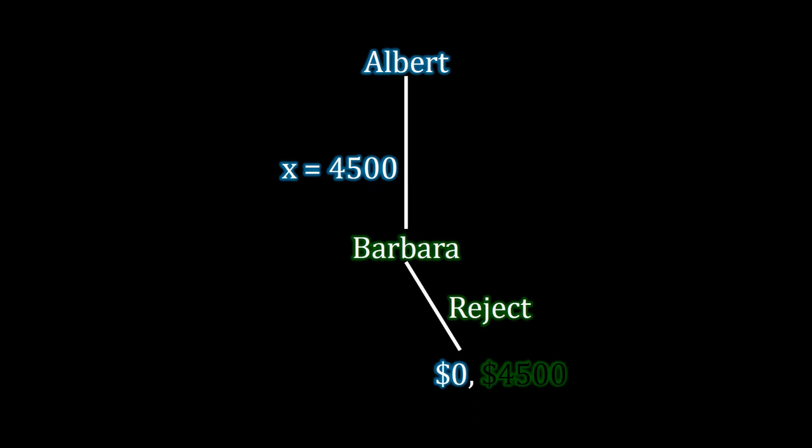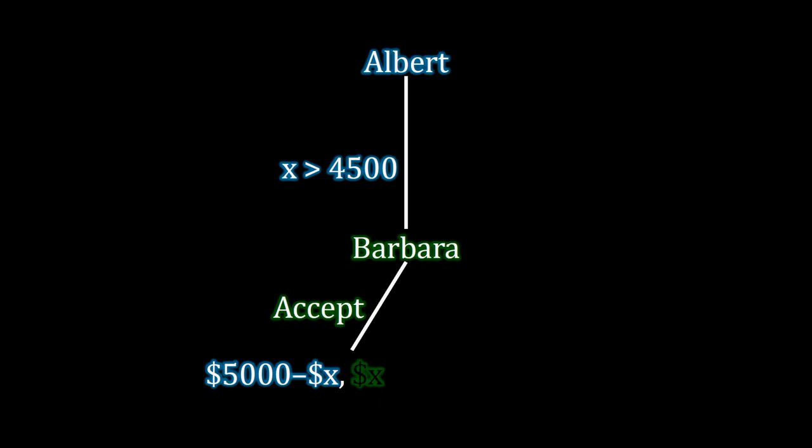Finally, if X is greater than $4,500, Barbara accepts and Albert's payoff is $5,000 minus X dollars, because that's how much he has to pay to purchase the vehicle. There are a whole bunch of different possibilities — X could be any value greater than $4,500 — and Albert's payoff depends on that offer value because X is in his payoff. We can ignore Barbara's payoff since we've already incorporated her decision through backward induction.